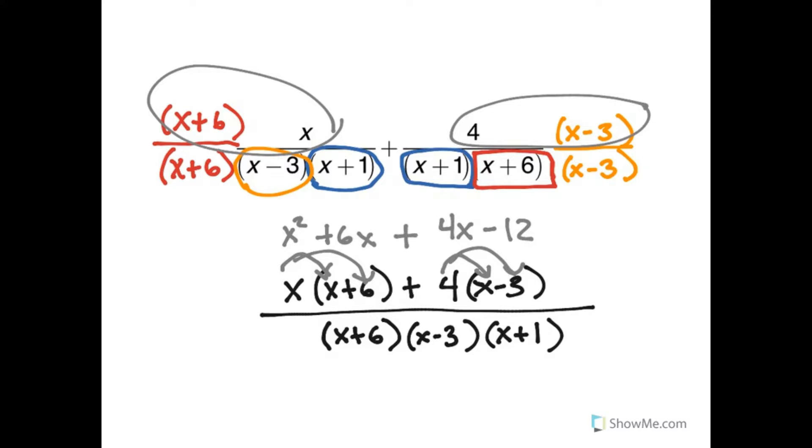So my like terms are 6x plus 4x, which is 10x. And the numerator is x squared plus 10x minus 12.